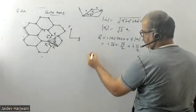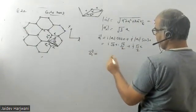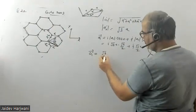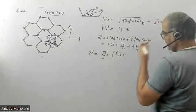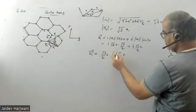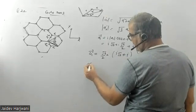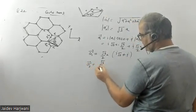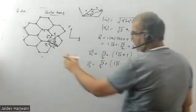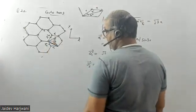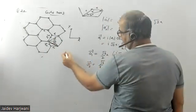So a1' equals (√3/2)a times (i√3 + j). Similarly, the value of vector a2' is (√3/2)a times (i√3 − j). These are written in terms of x and y components, and these are the primitive lattice vectors of the direct lattice.